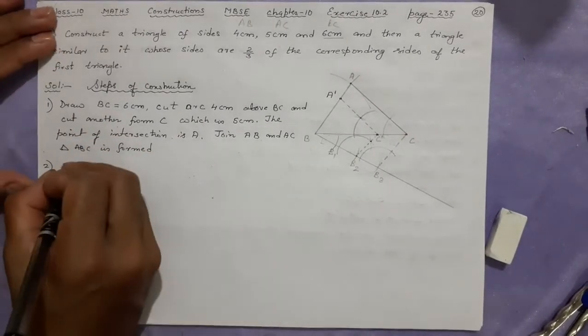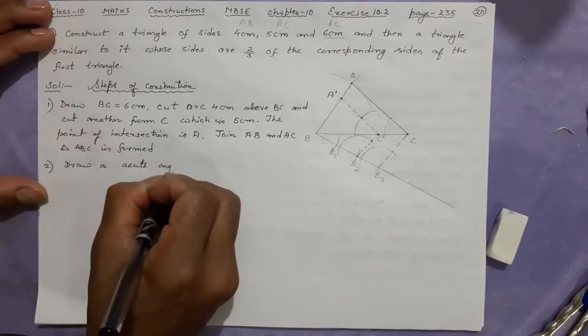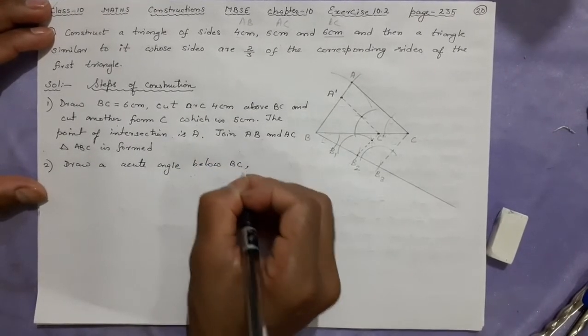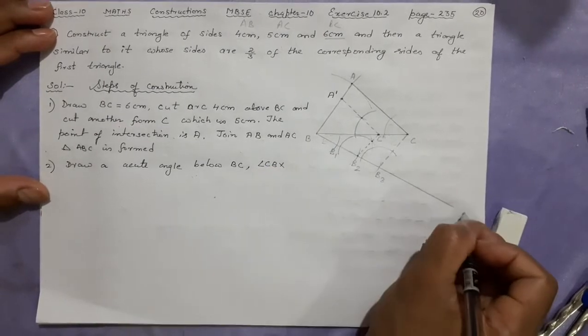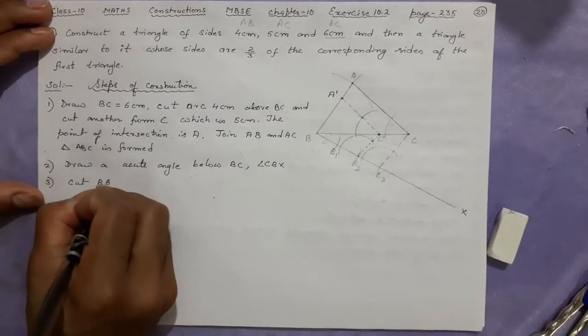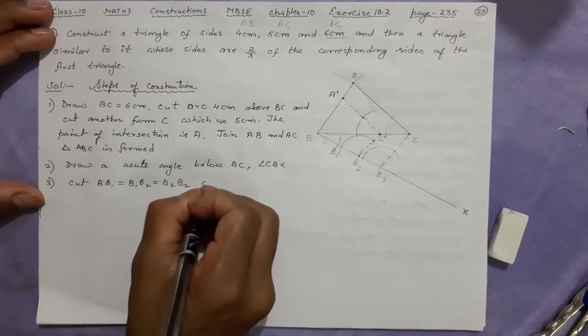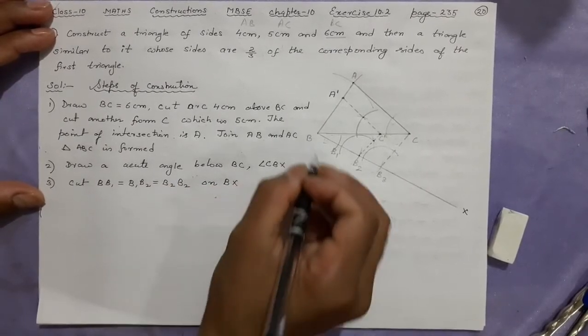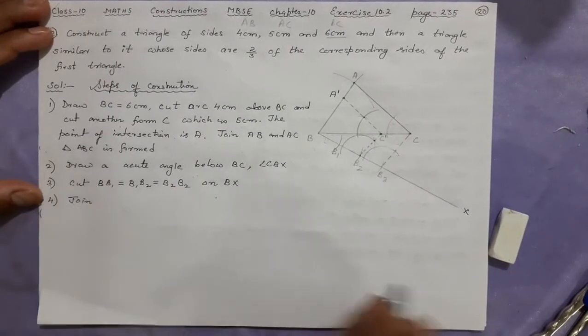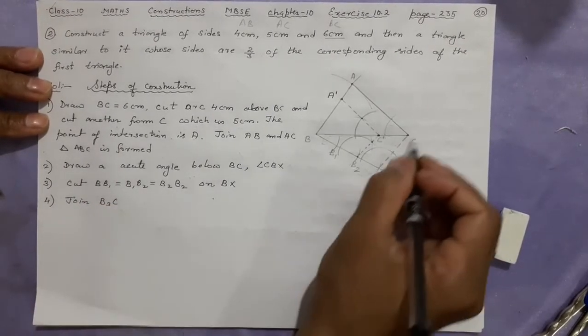Number 2: You can divide it into many parts also, it is up to you. Now from here, draw an acute angle below BC. What is that angle? Angle CBX. Done. Now cut B-B1 equal to B1-B2 equal to B2-B3 on BX. Done, this cutting. Number 4 is what? Joining this today. If you know the whole procedure, it is very easy to write the construction. B3-C joined us.